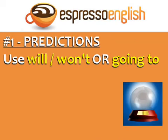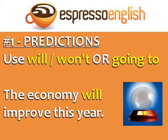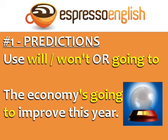For predictions, use will, won't, or going to. For example, 'the economy will improve this year' is the same as 'the economy's going to improve this year.'